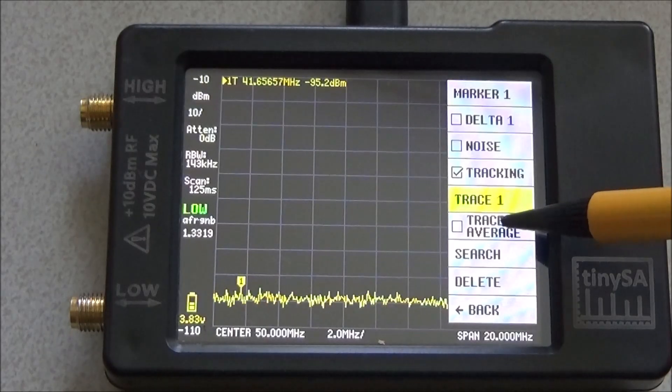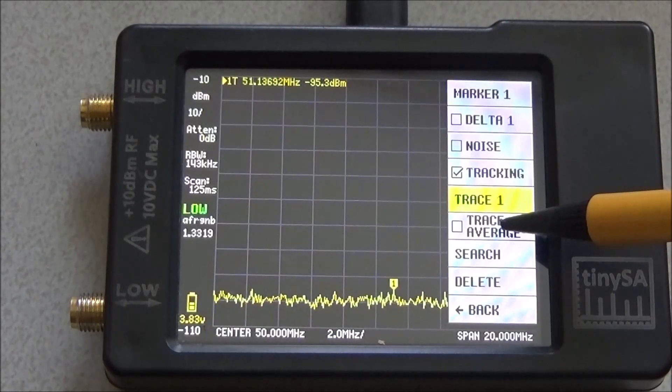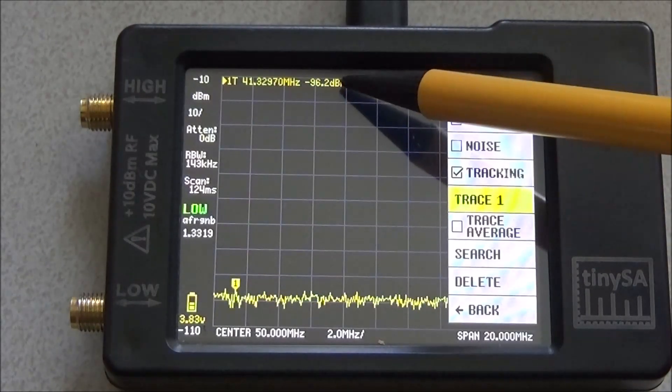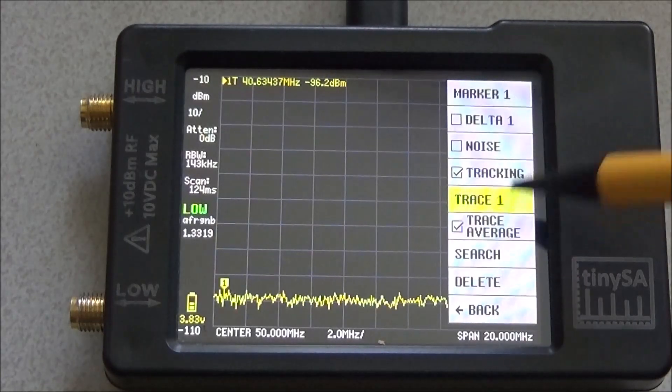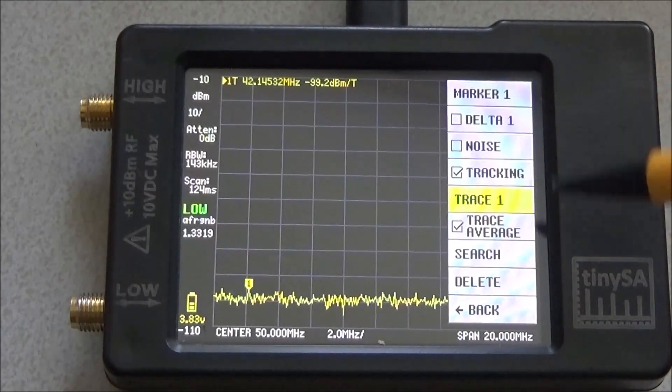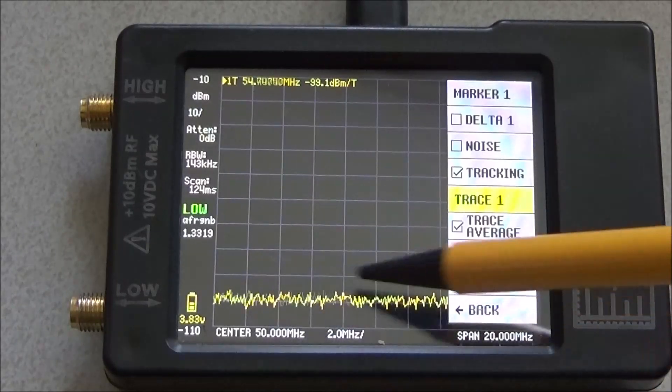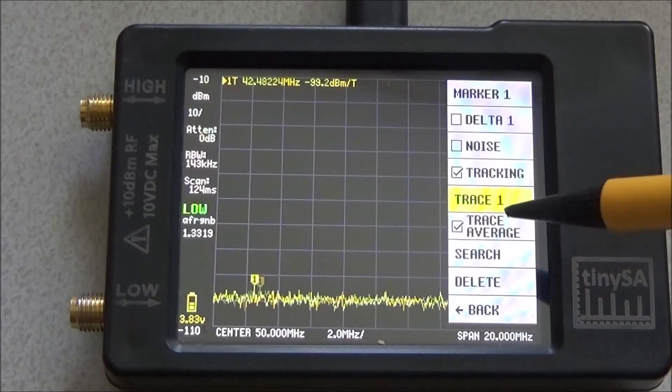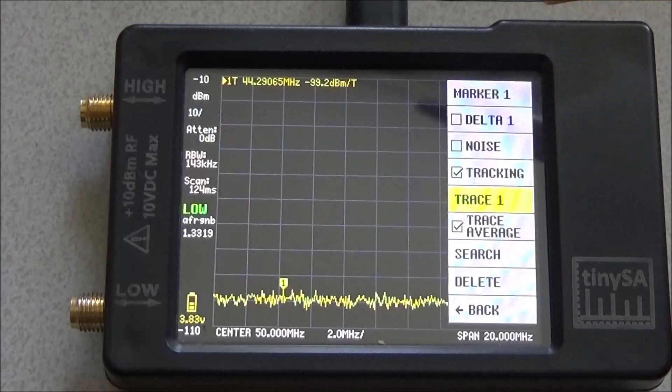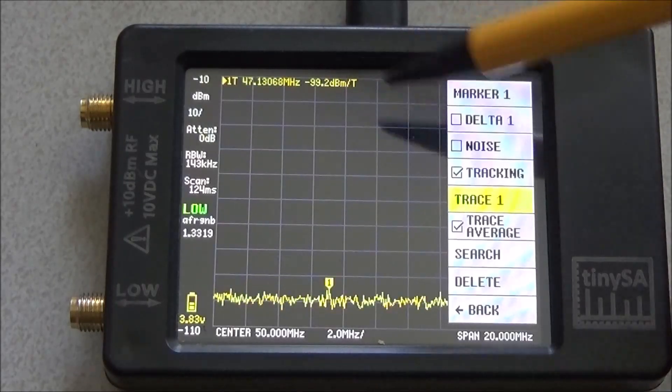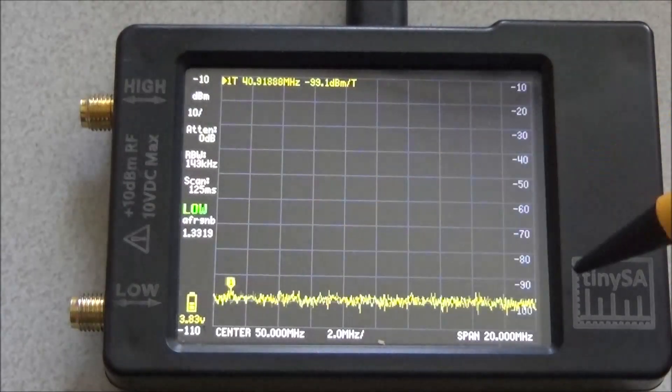But you can also do now trace average. And watch how this number here changes. And by trace average the marker still positions on the maximum, but the value that is being displayed is the average over the total trace.